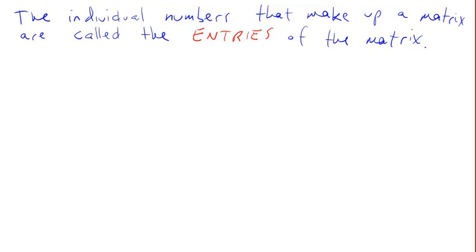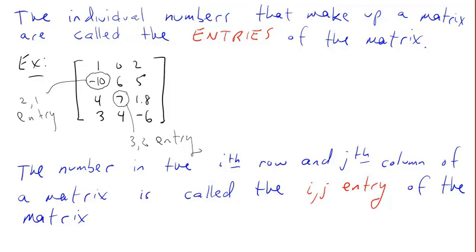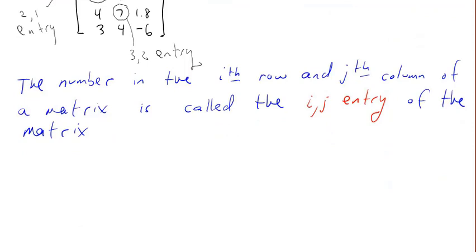The individual numbers that make up a matrix are called the entries of the matrix. For example, in this 4 by 3 matrix, this is an entry in the second row, first column, so we call it the 2, 1 entry. This is an entry in the third row, second column, the 3, 2 entry. In general, the number in the ith row and jth column is called the i, j entry.